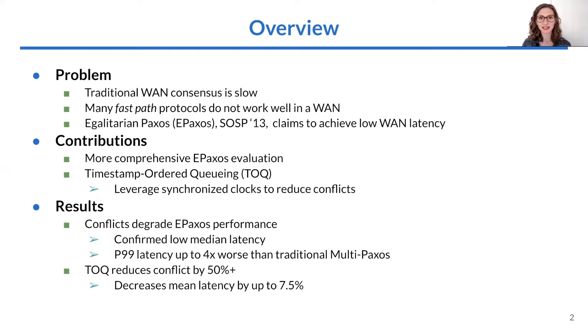An exception to this is egalitarian Paxos, or EPaxos, which is a fast path consensus protocol that claims to achieve low WAN latency.